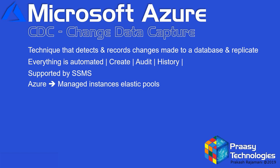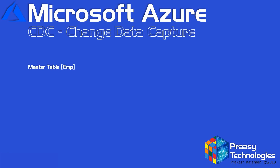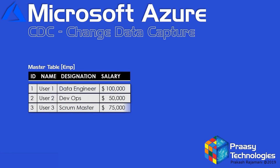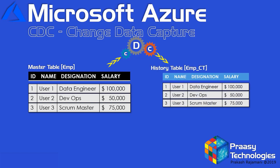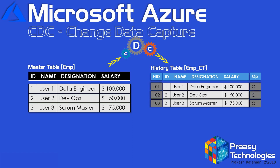Let's see an example so that we can easily understand what CDC is. Let's assume we have created a master table EMP which has three records but does not contain any date or time column. We are going to create a CDC on this table, then automatically CDC creates a history table employee_CT which has the details of the master table. It also includes a unique column for this history table and another column for operations, which specifies what kind of operation it is — insert, update, or delete — and also includes the timestamp.